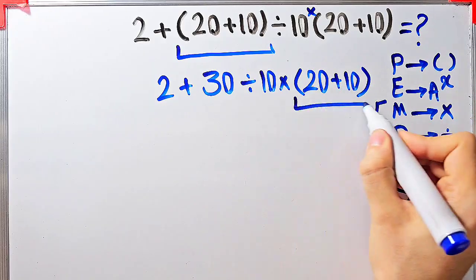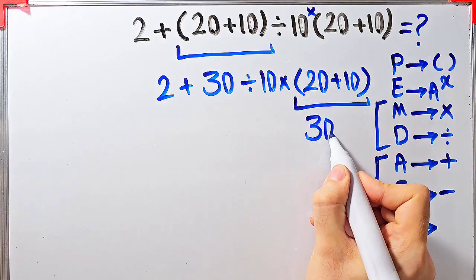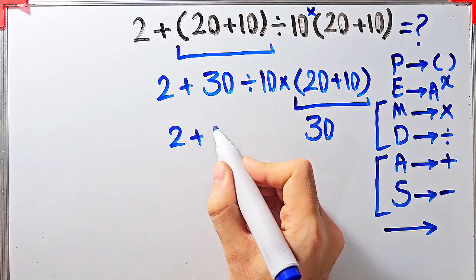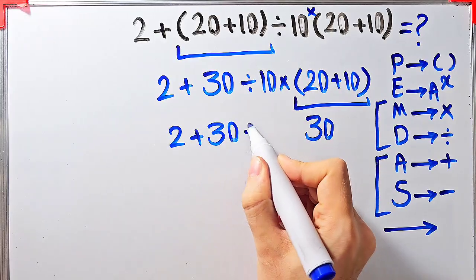Again, we simplify these parentheses. 20 plus 10 equals 30. Now the question is 2 plus 30 divided by 10, then times 30.